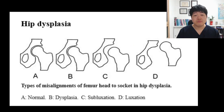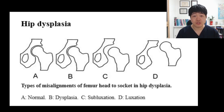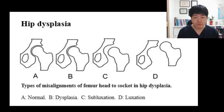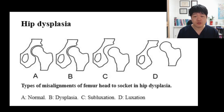Before I describe the tests, we should know about hip dysplasia pathology. You should understand what is hip dysplasia. Hip dysplasia is the medical term for a hip socket that doesn't fully cover the ball portion of the upper thigh bone. This allows the hip joint to become partially or completely dislocated.